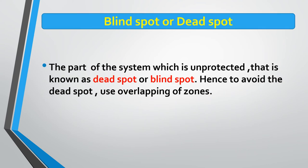One important term related to protection zones is the dead spot or blind spot. The part of the system which is unprotected is known as a dead spot or blind spot. To avoid dead spots, overlapping is used in protection zones — protection zones should be overlapped with each other to avoid dead spots or blind spots.